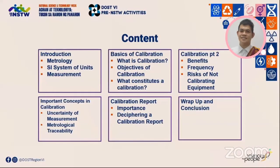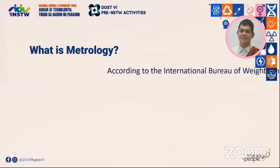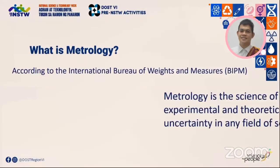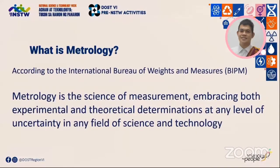Often confused with meteorology, which is the science dealing with the atmosphere and its phenomena, including both weather and climate, metrology is defined by the International Bureau of Weights and Measures or the BIPM as a science of measurement, embracing both experimental and theoretical determinations at any level of uncertainty in any field of science and technology. In essence, metrology is simply the theoretical and practical use of the science of measurement.